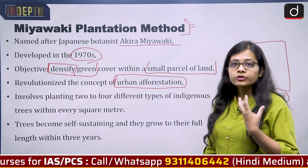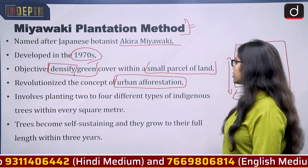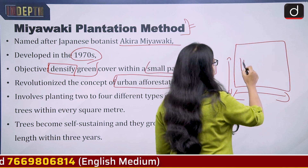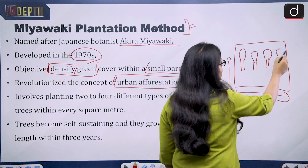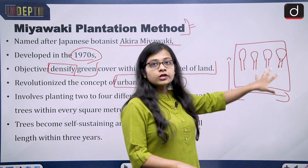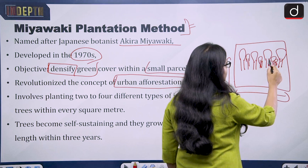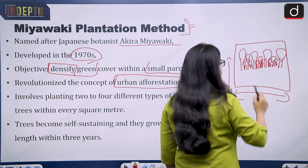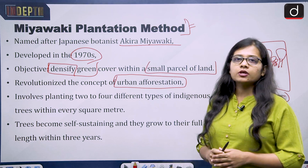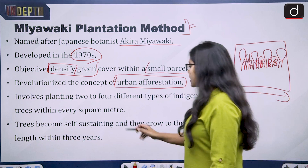This technique has revolutionized the concept of urban afforestation because urban areas needed a technique that could address afforestation with efficiency, productivity, and density. It involves planting two to four different types of indigenous trees within every square meter. For example, very tall trees are planted, and in between those, smaller trees, and in between those, even smaller ones — so that every inch of the area is used densely for afforestation.